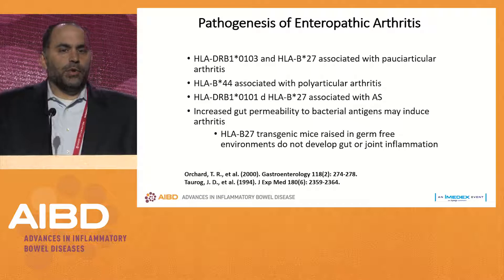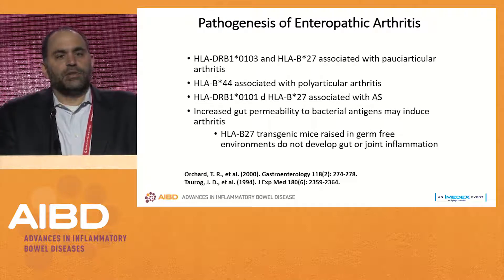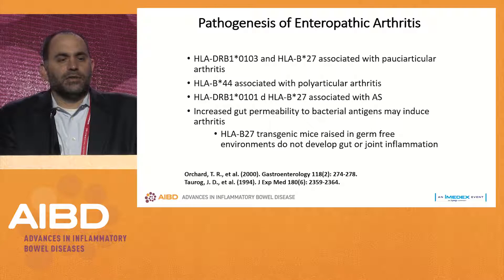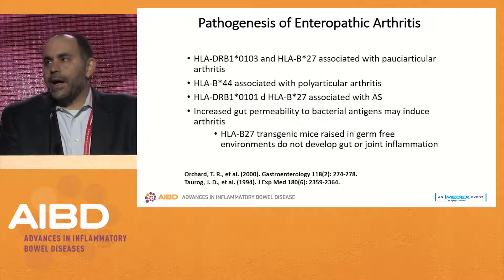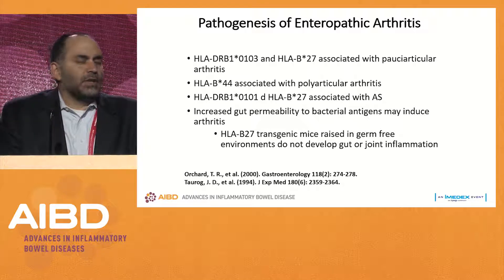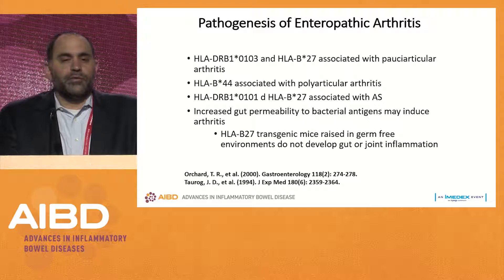The pathogenesis is not really known. There are some HLA genotypes more common in patients with type 1 and type 2 arthritis. Patients with ankylosing spondylitis are known to be HLA B27 positive. The microbiome is probably important here as well — HLA B27 transgenic mice raised in germ-free environments do not develop either gut or joint inflammation.